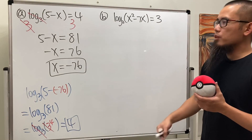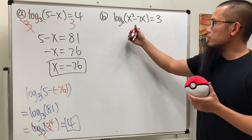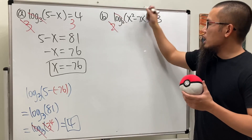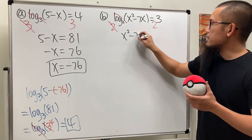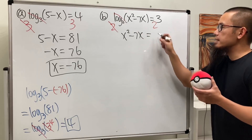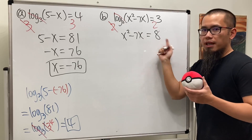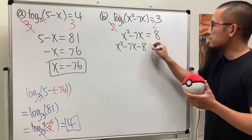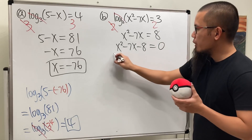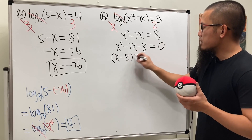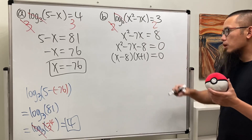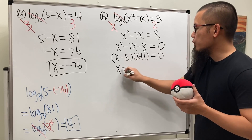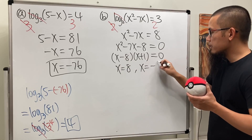For the second one, let's do the same thing. We have log base 2, so we do 2 to that power on both sides — cancel, cancel. Here we get x squared minus 7x, and 2 to the third power is equal to 8. Bring the 8 to the other side: x squared minus 7x minus 8 equals 0. Factoring, we get (x minus 8)(x plus 1) equals 0, so x is equal to 8 or x is equal to negative 1.